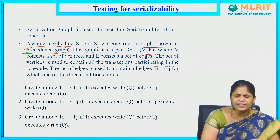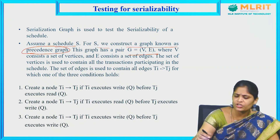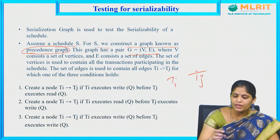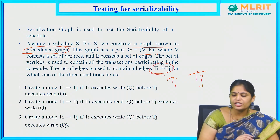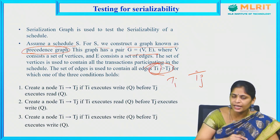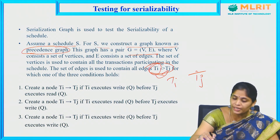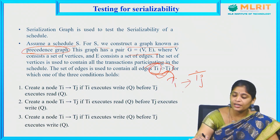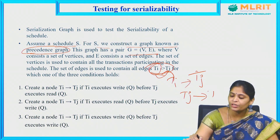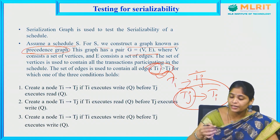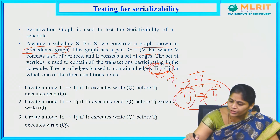Let us consider two transactions TI and TJ. TI tends to TJ means whatever operations I am performing in TI must complete first, then only TJ must perform. If TJ tends to TI, it means the transactions in TJ have been completed first, then only TI will be executed.